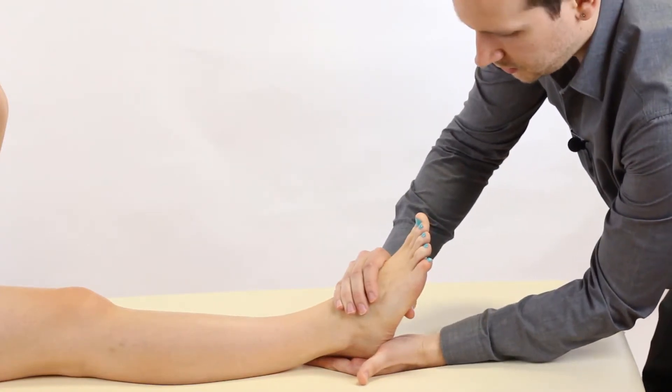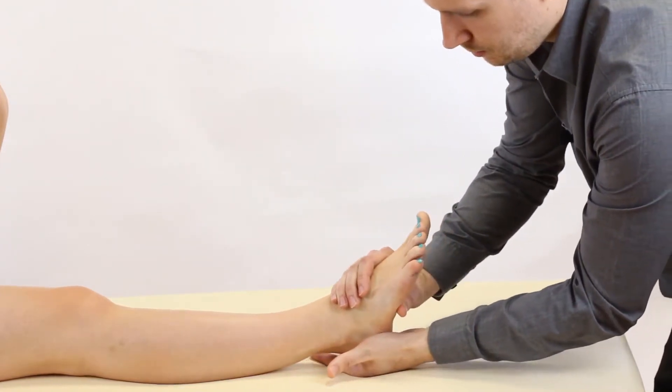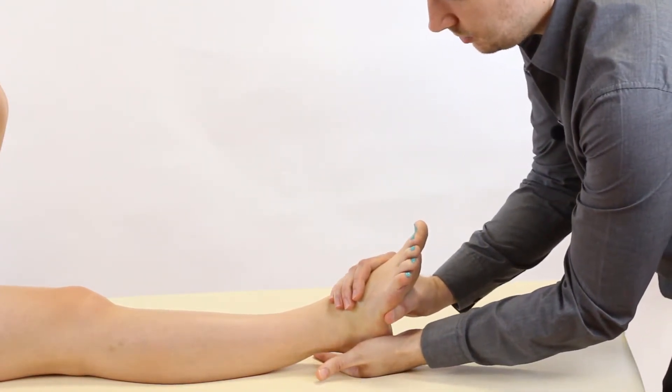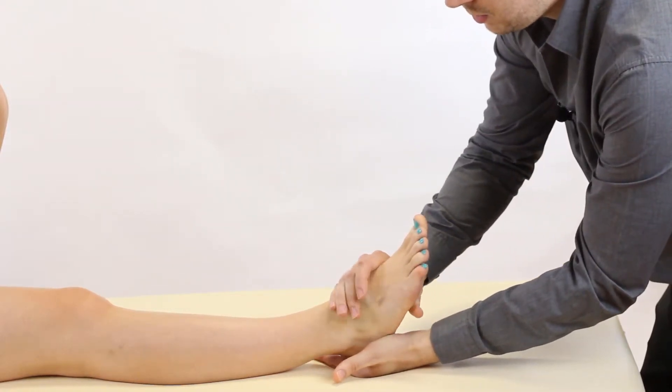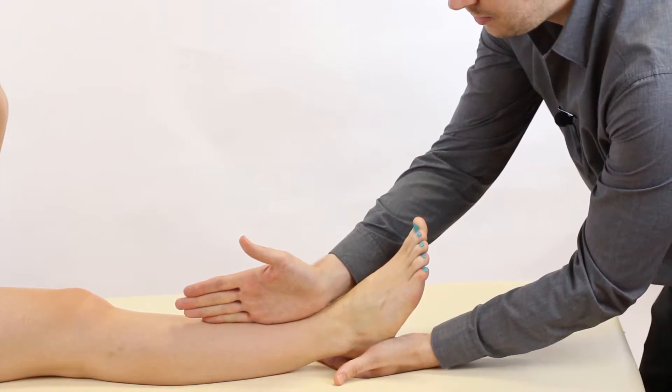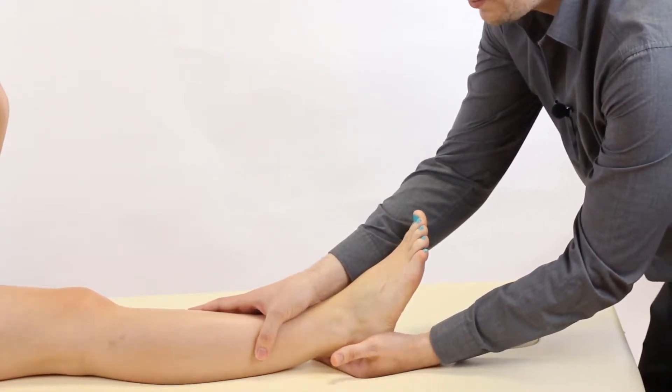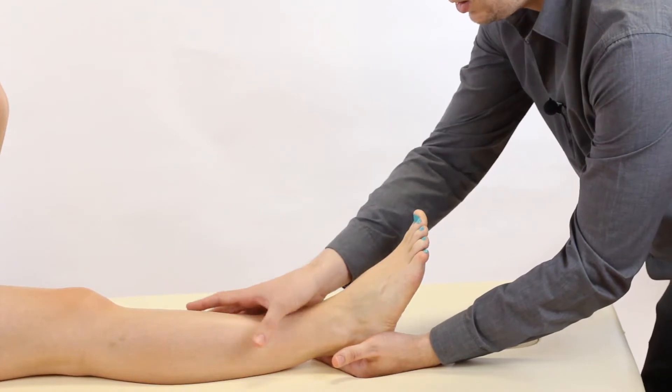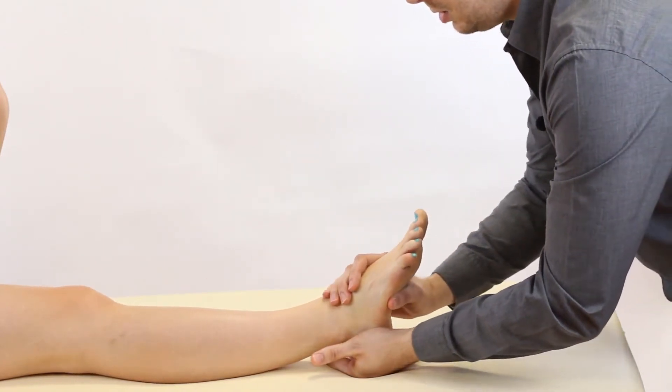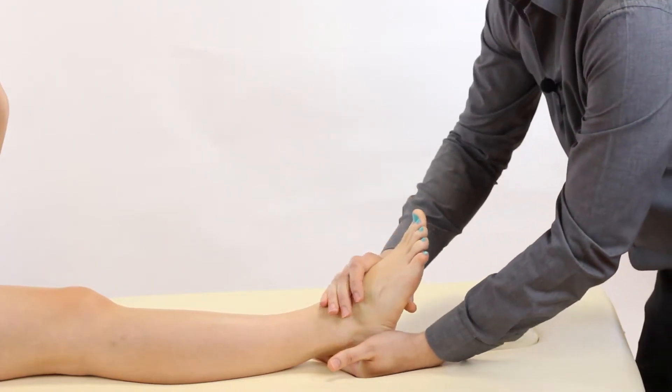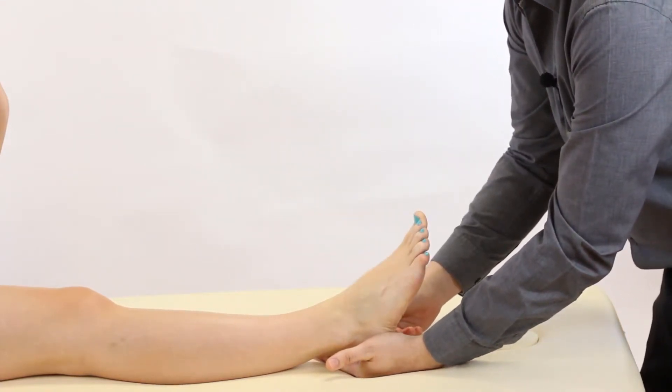From here we're going to pull both hands across to bring the foot into a fully everted position. Hopefully you can see at home that I've already created an error by bringing the patient's foot out into lateral rotation. So if that happens to you in clinic just bring the leg back into alignment and repeat the same thing again so you're not misleading yourself into a false range.